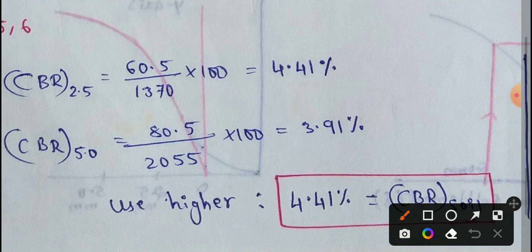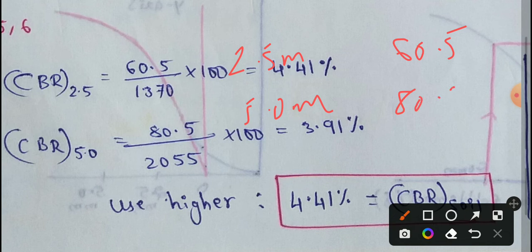Let me show the penetration values. At 2.5mm, the value is 60.5kg. At 5.0mm, the value is 80.5kg.